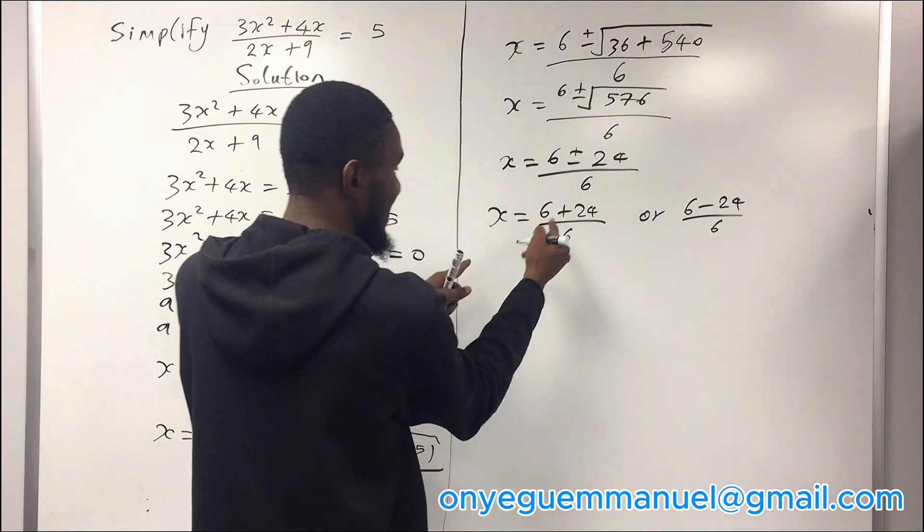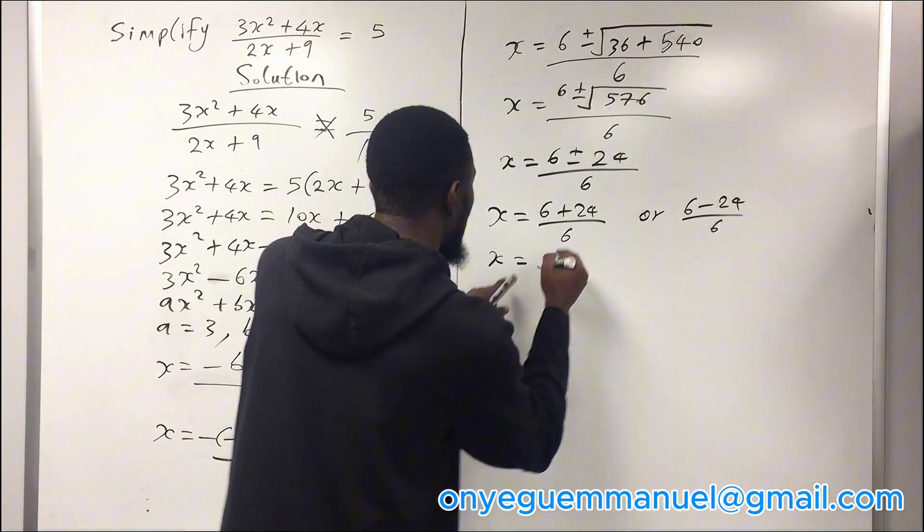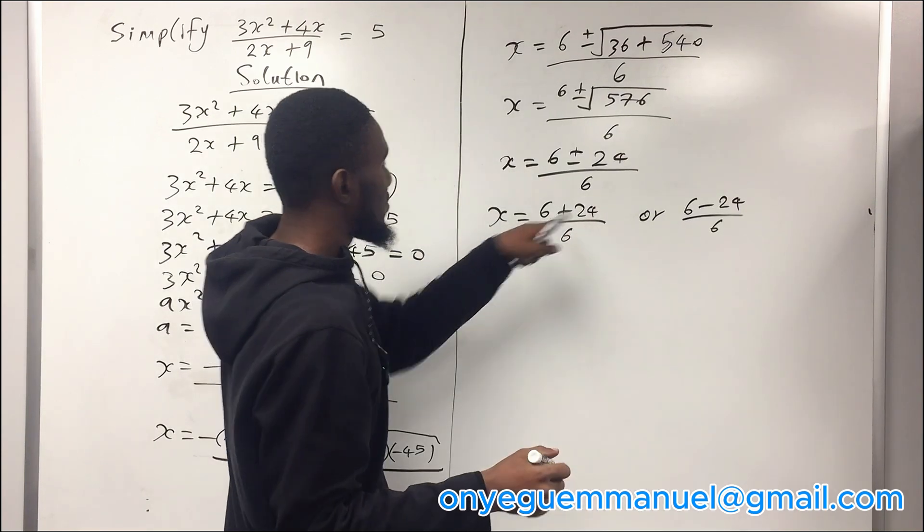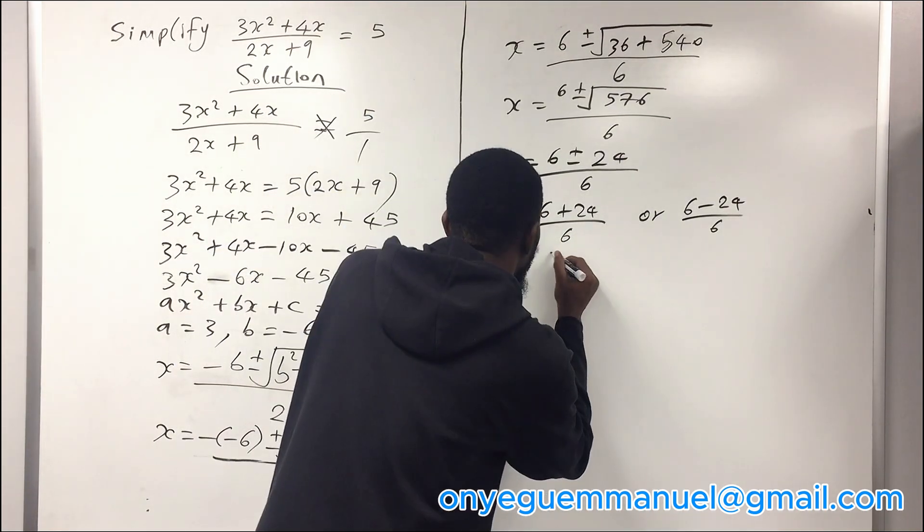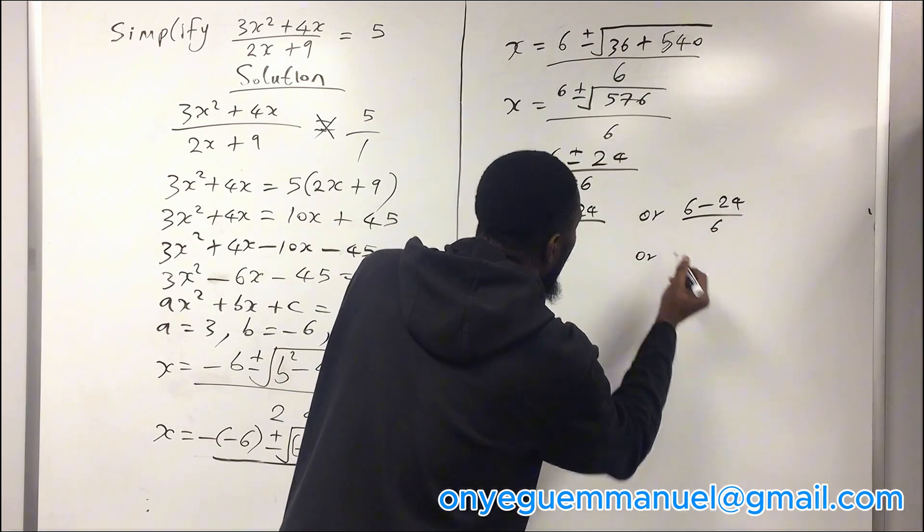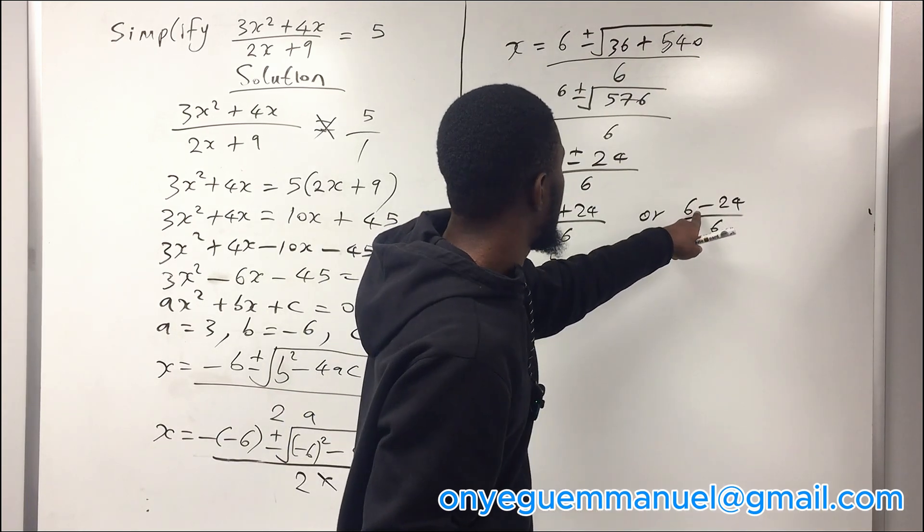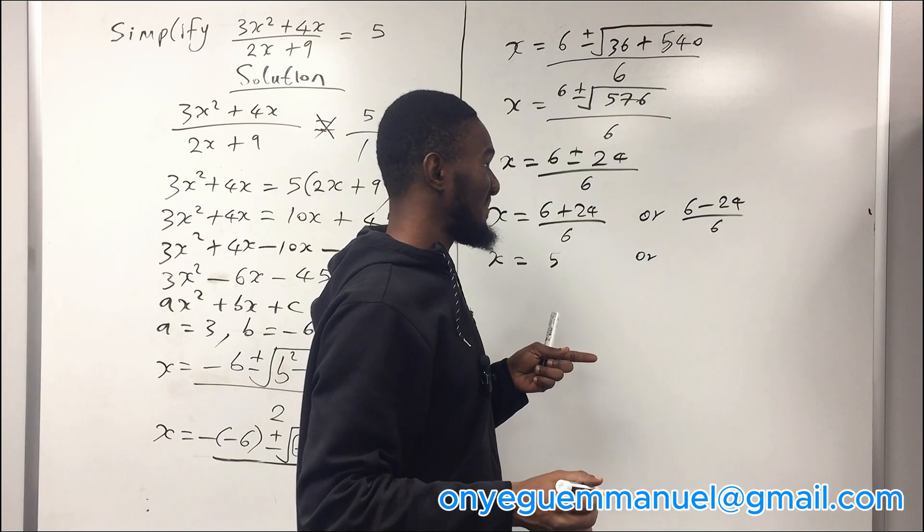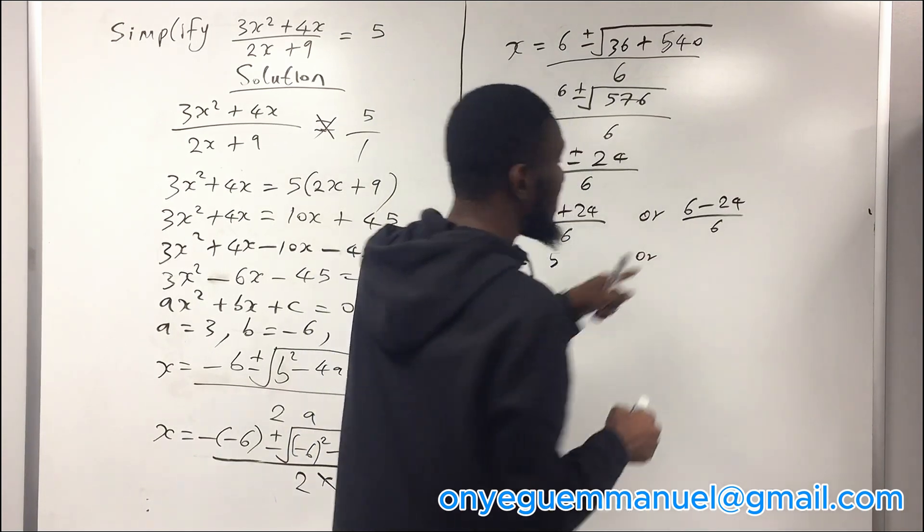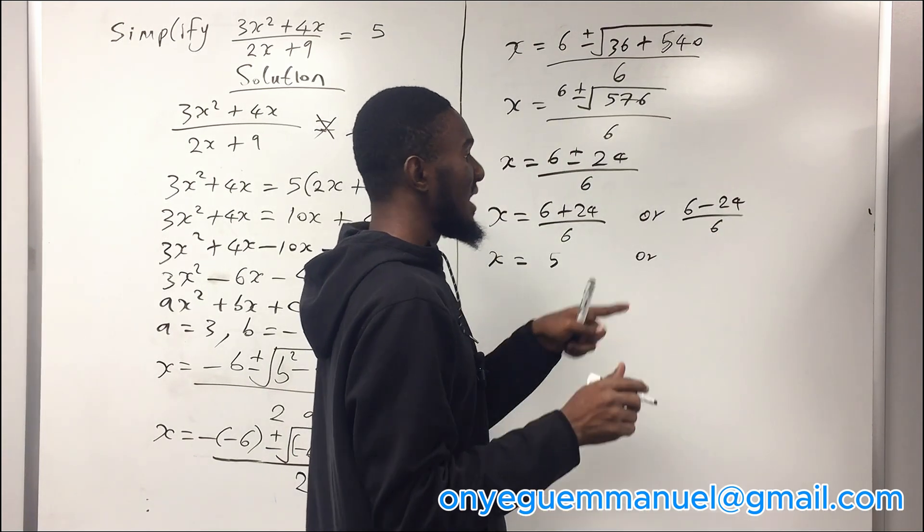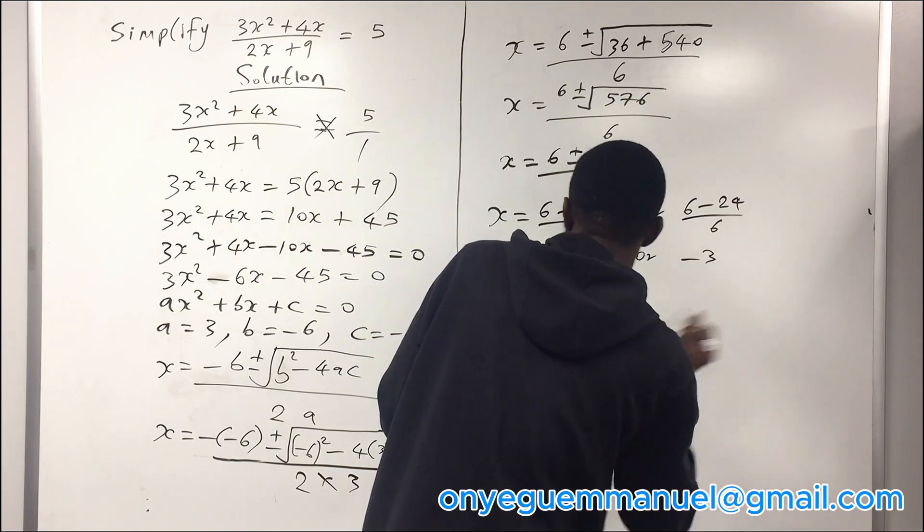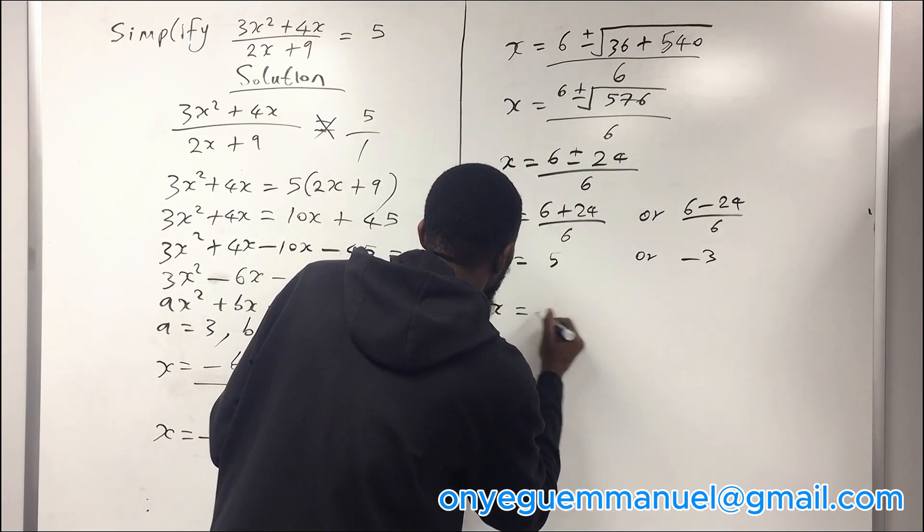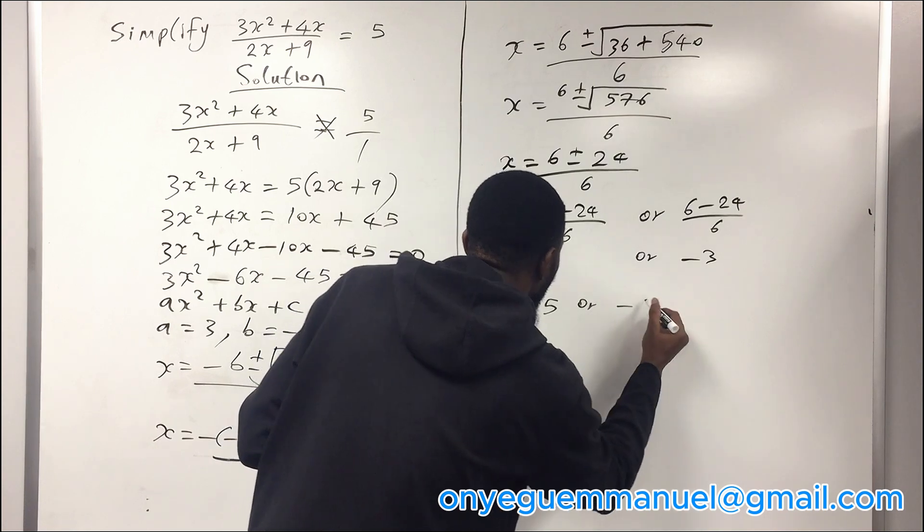So here, if x is this, we have that x is equal to 6 plus 24 will give you 30, 30 divided by 6 will give you 5. Or 6 minus 24 will give you minus 18, 18 divided by 6 will give you minus 3. So hence, x is equal to 5 or minus 3. As simple as that.